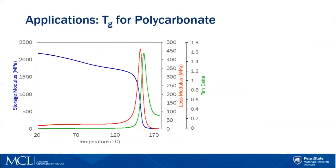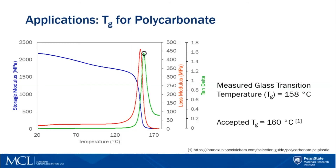Another example of mechanical characterization is shown here for determining the glass transition temperature for a polycarbonate material. This sample was tested on a dynamic mechanical analyzer, a DMA instrument. The specimen was oscillated between 0 and 10 percent strain as the temperature was increased. From this plot, we are able to analyze the loss modulus and the tan delta in order to determine the specific glass transition temperature for this material.